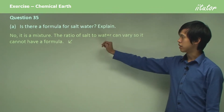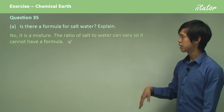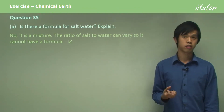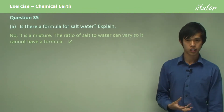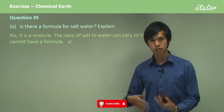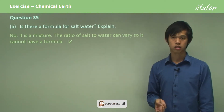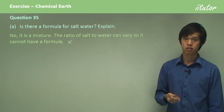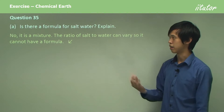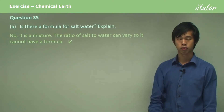It's a mixture. The ratio of salt to water can vary, so it cannot have a formula. Formulas are reserved for things that don't vary or are repeating units, whereas you can change the concentration of salt in salt water. So you can't have a chemical formula for it.